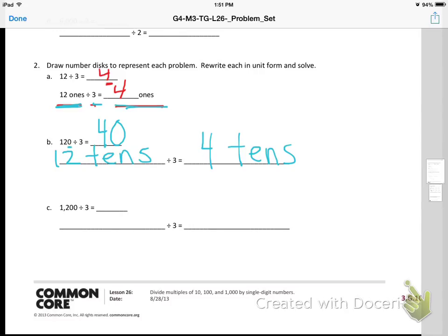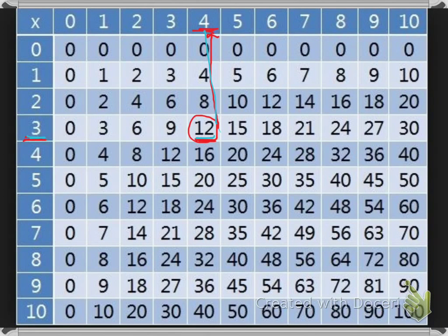Finally, my last problem on the problem set is 1,200 divided by 3, but I see two zeros. I know that two zeros means hundreds. So instead of calling it 1,200, I'm going to call it 12 hundreds. 12 hundreds divided by 3. That is a lot like going to the 3 column, finding where the answer is 12, going up and seeing that 12 divided by 3 is 4.